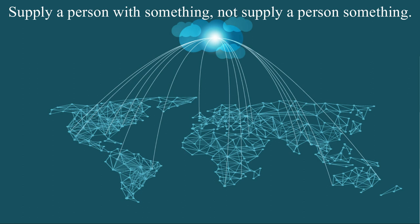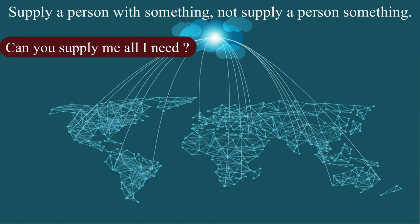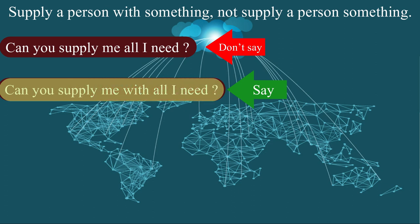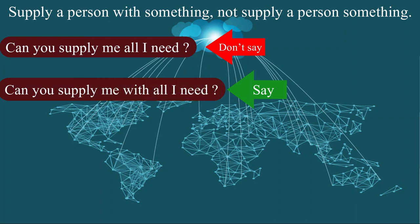Our next sentence is: 'Can you supply me all I need?' There is something missing — it is incorrect to say 'supply a person something.' The correct form is 'supply a person with something.' So the correct sentence is: 'Can you supply me with all I need?' We also use 'provide a person with' — for example, 'He provided his son with all he needed.'